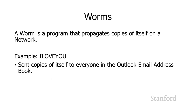A worm is a program that propagates copies of itself on a network. We saw an example of this last lecture with 'I Love You' — an email you received with an attachment. If you opened the attachment, it was actually a Visual Basic script which ran on Microsoft Outlook, looked at all the addresses in your Outlook email book, and sent copies of itself to everybody in the address book. This is a worm in the sense that it makes copies of itself and propagates itself through a network.